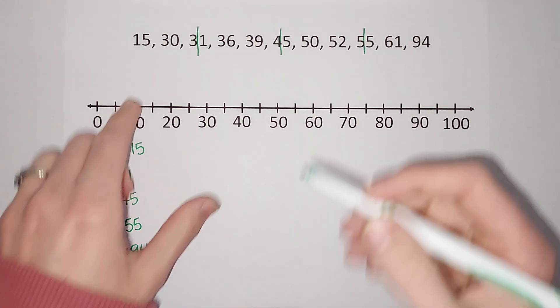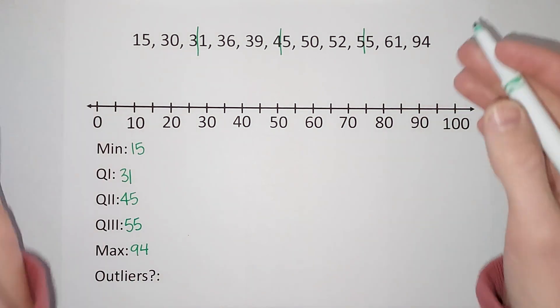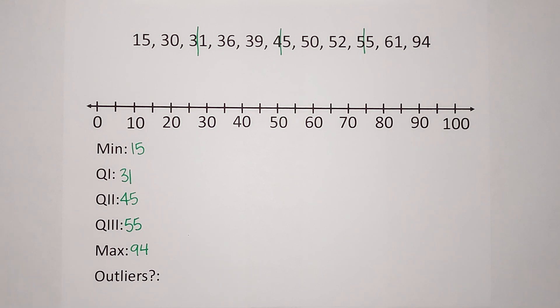An outlier is anything that is far enough from the data that I want to represent it a little bit differently, so it doesn't make my data look skewed.